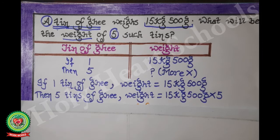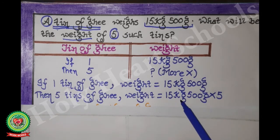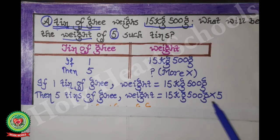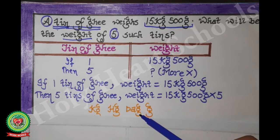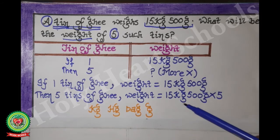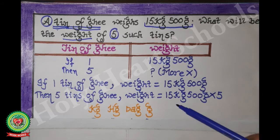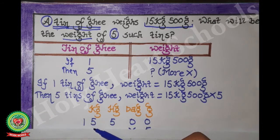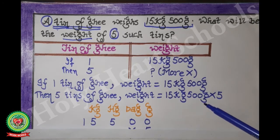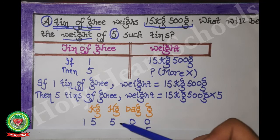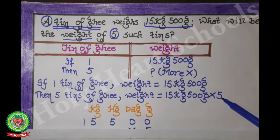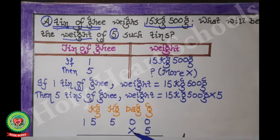The statement is given in kilograms and grams, so we will write down the table from kilograms till grams: kilograms, hectograms, decagrams, and grams. We will arrange these numbers below these units: 15 goes under kg, 500 grams means 5 below hectograms, 0 below decagrams, 0 below grams. Then we multiply by 5.